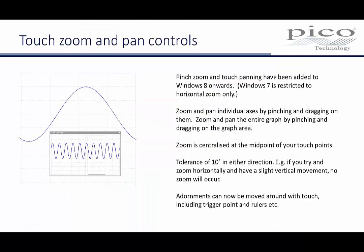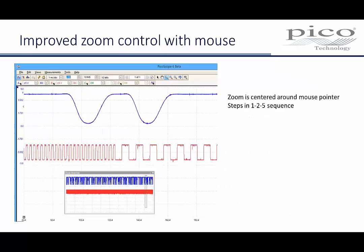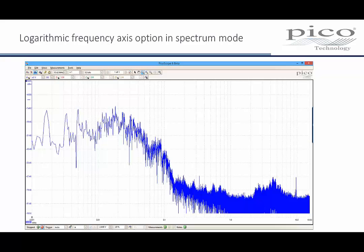PicoScope now has support for touch screens, starting with pinch and zoom, which makes it easy to navigate large waveforms and to zoom into the specific area of interest. Zooming and panning large waveforms with a mouse has been improved too. Zoom is now centred around the mouse pointer and steps through in a 1-2-5 sequence. If you work in the frequency domain, you'll like the new logarithmic frequency axis option. It helps when you need to see both low- and high-frequency characteristics of broad-spectrum traces.